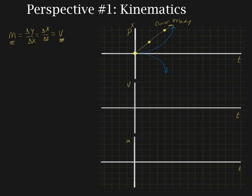You might end up with a line that starts somewhere and goes straight, or even a curved line — it doesn't matter. What matters is that the Y-intercept is the initial position when time was equal to zero. So the key information from a position-time graph: the slope is equal to velocity, area doesn't equal anything, and the Y-intercept is equal to the initial position.